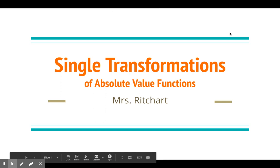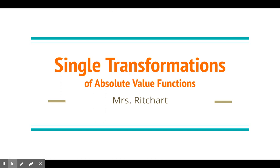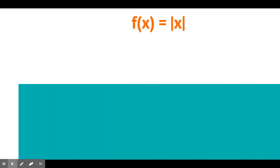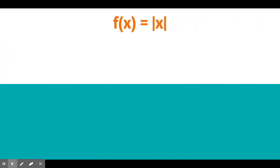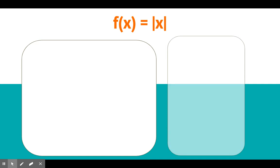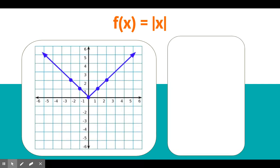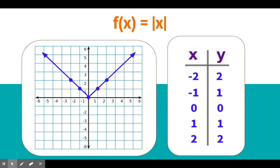Hi everyone. We're going to continue to talk about transformations, but this time we're going to look at the absolute value function that you learned about yesterday with Mrs. Herbert. So to review, our function equals absolute value of x. It looks like this, where all values are on or above the x-axis — they're positive. Here is our table: every negative number becomes a positive, every positive stays positive. This is our parent function.